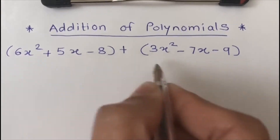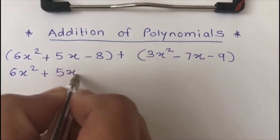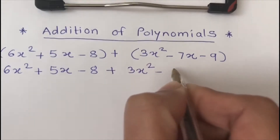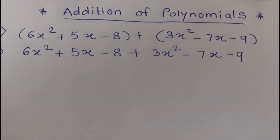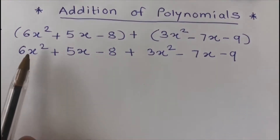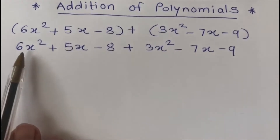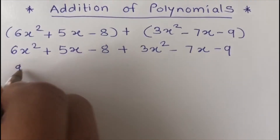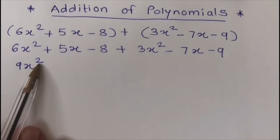First, I write this given polynomial without brackets: 6x squared plus 5x minus 8 plus 3x squared minus 7x minus 9. Now we can combine the terms that have the same degree of x. Here there is 6x squared and 3x squared — these are the highest degree terms, and when we add them it gives us 9x squared, where x is raised to the second power.